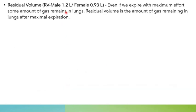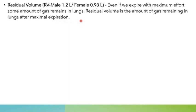The next parameter is residual volume. If we expire with maximum effort, some amount of gas still remains in the lungs. Residual volume is the amount of gas remaining in the lungs after maximal expiration — that means after forceful expiration.